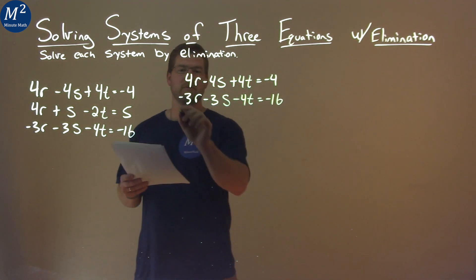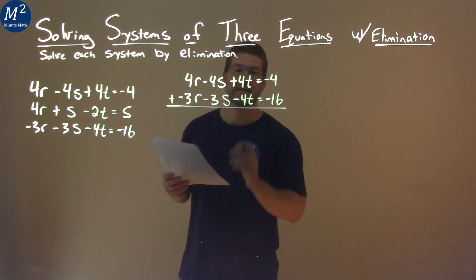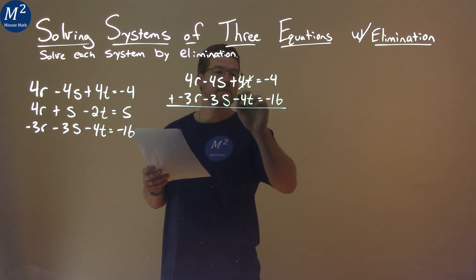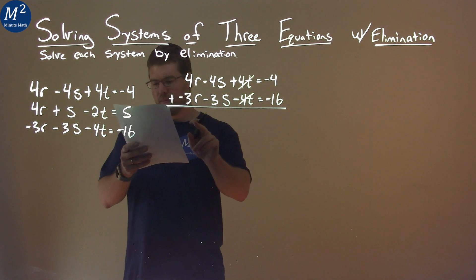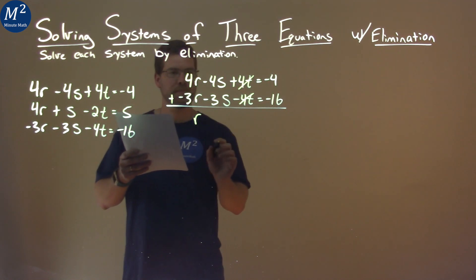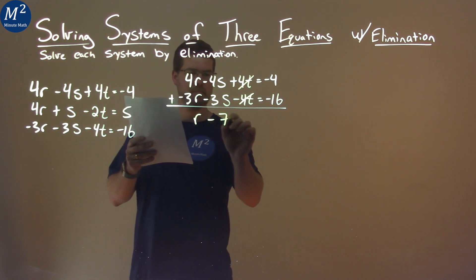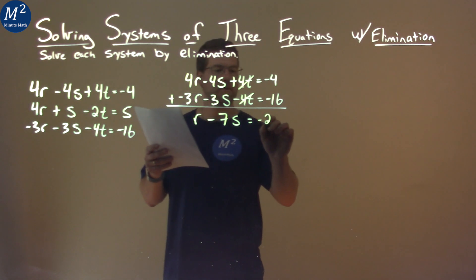What happens when I add these two equations together? What variable is going to eliminate? And that's going to be the t's. The t's will cancel out. So 4t plus negative 4t is 0t. Let's add the rest. 4r plus negative 3r is 1r. Negative 4s plus negative 3s is negative 7s.